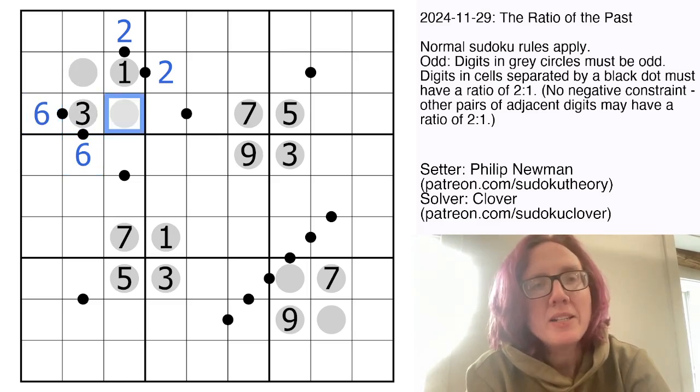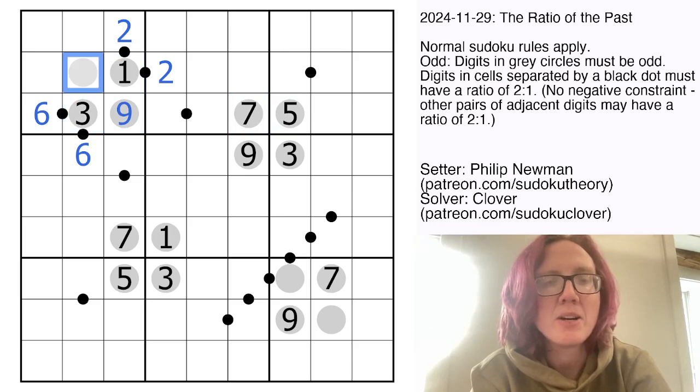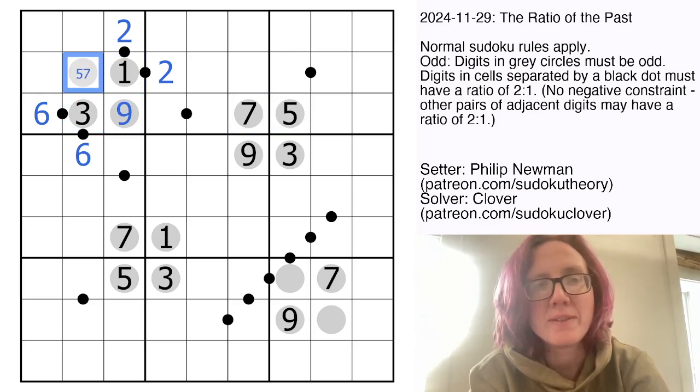These two digits have to be odd. This cell though sees 4 of the 5 possible odd digits, 1, 3, 5, and 7. So that has to be a 9. And then this has to be our remaining odd digit, which is either 5 or 7.